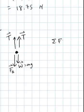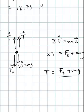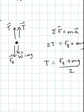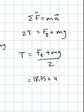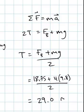So sum of the forces is ma. I've got 2t has to equal my magnetic force plus my weight. So I'm only interested in the tension in one of the wires. So the tension in one wire is the magnetic force plus 4 kilograms times 9.8 meters per second squared, divided by 2. And I get a tension of 29 newtons.